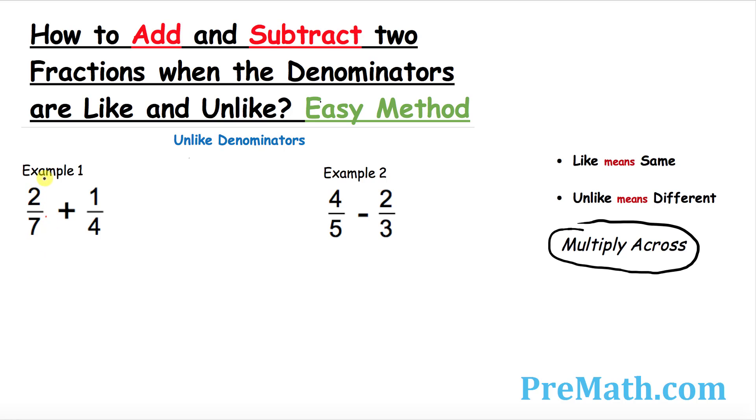First of all, before we get started with example number one, I want you to draw a big long fraction bar. Once you have done that, I want you to cross multiply. Multiply them across: 2 and 4, 2 times 4 is 8.